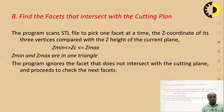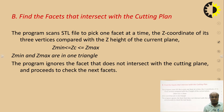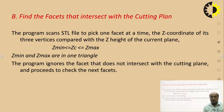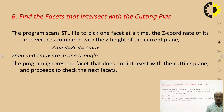Then we have to find the facets that intersect with the cutting plane. First we find the cutting plane, then we find the facets that intersect with it. The program scans the STL file to pick one facet at a time; the Z coordinates of its three vertices are compared with the Z height of the current cutting plane: Z minimum ≤ Z of cutting plane ≤ Z maximum. The program ignores facets that do not intersect with the cutting plane and proceeds to check the next facet.